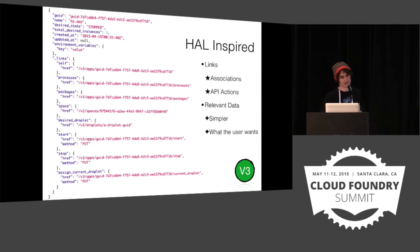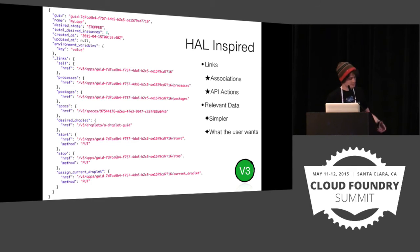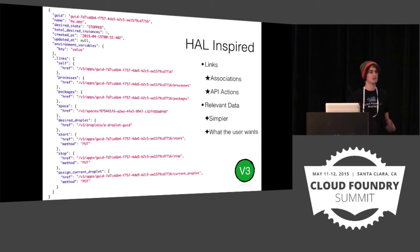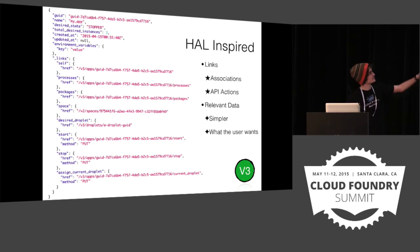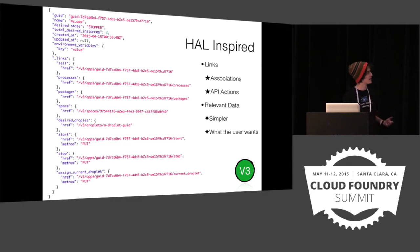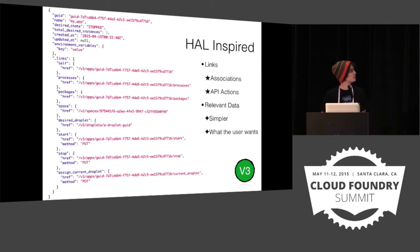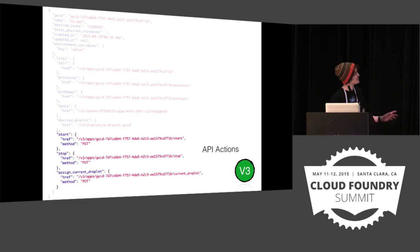In V3 API responses, we took inspiration from the Hypertext Application Language, otherwise known as HAL. We simplified the response: we removed the metadata section, removed the entity section, and moved most data top level. When getting a response, I get what's localized to what I'm fetching — in this case an app: name, GUID, state, environment variables, pretty basic. A key point of HAL is the links section — think of it as a map to help users navigate through the API. It contains paths to fetch the current object, associated objects, and API actions themselves.